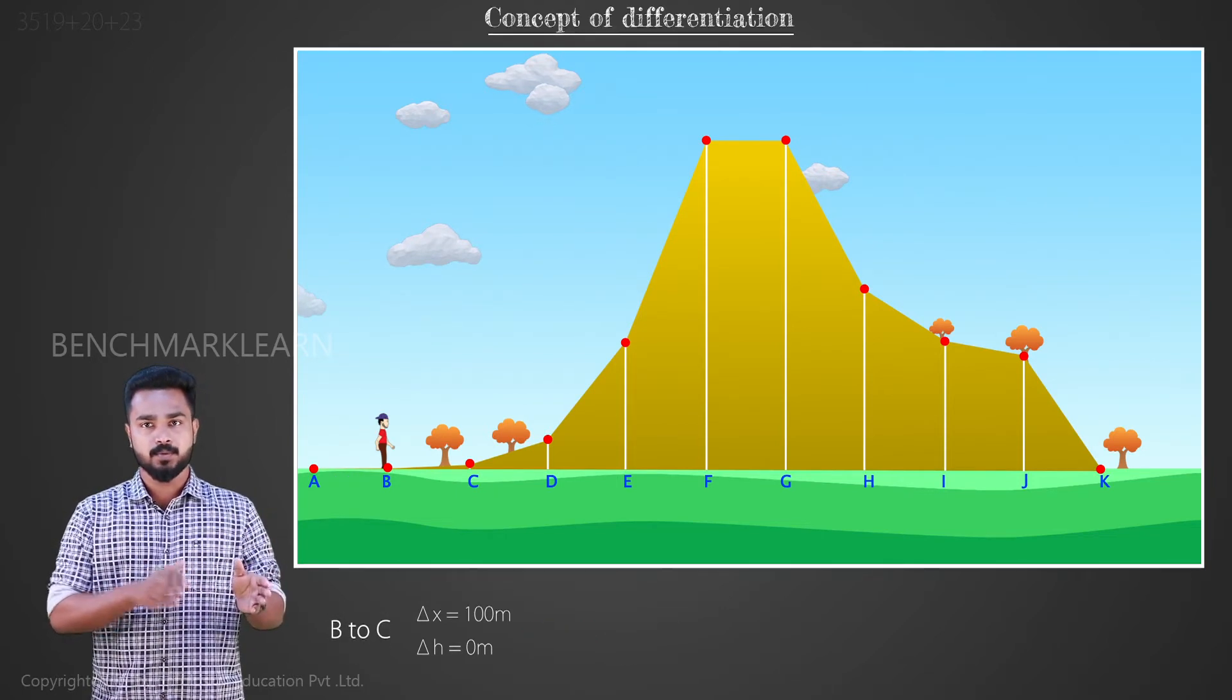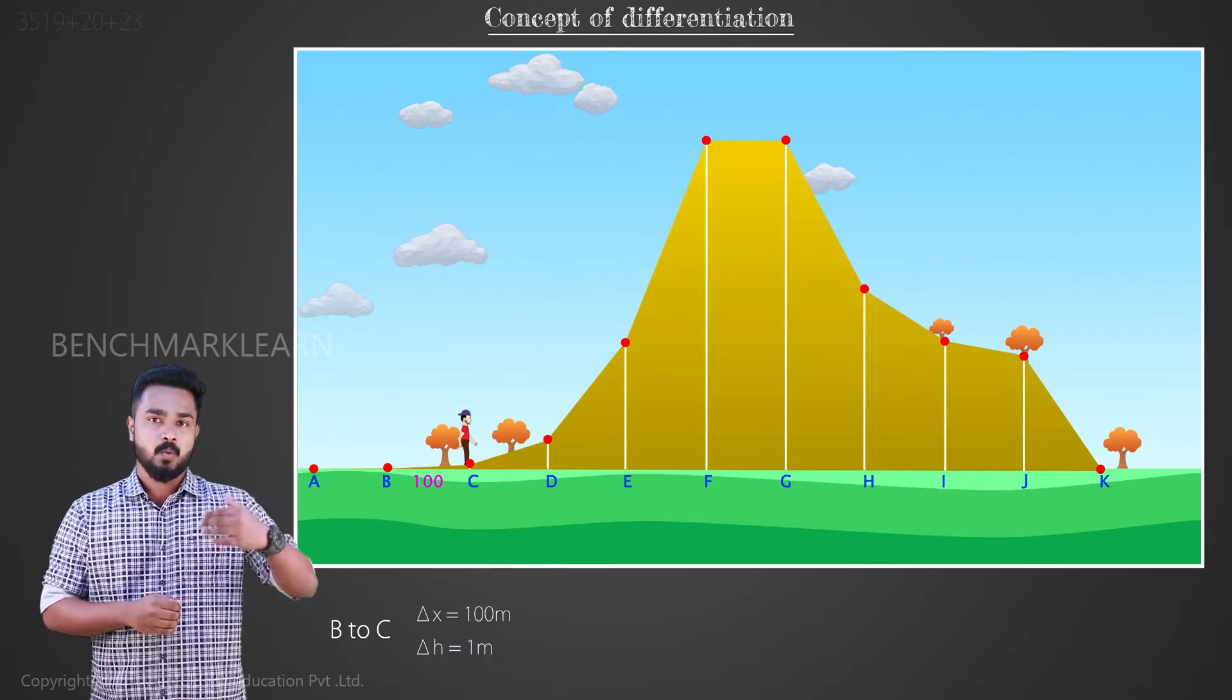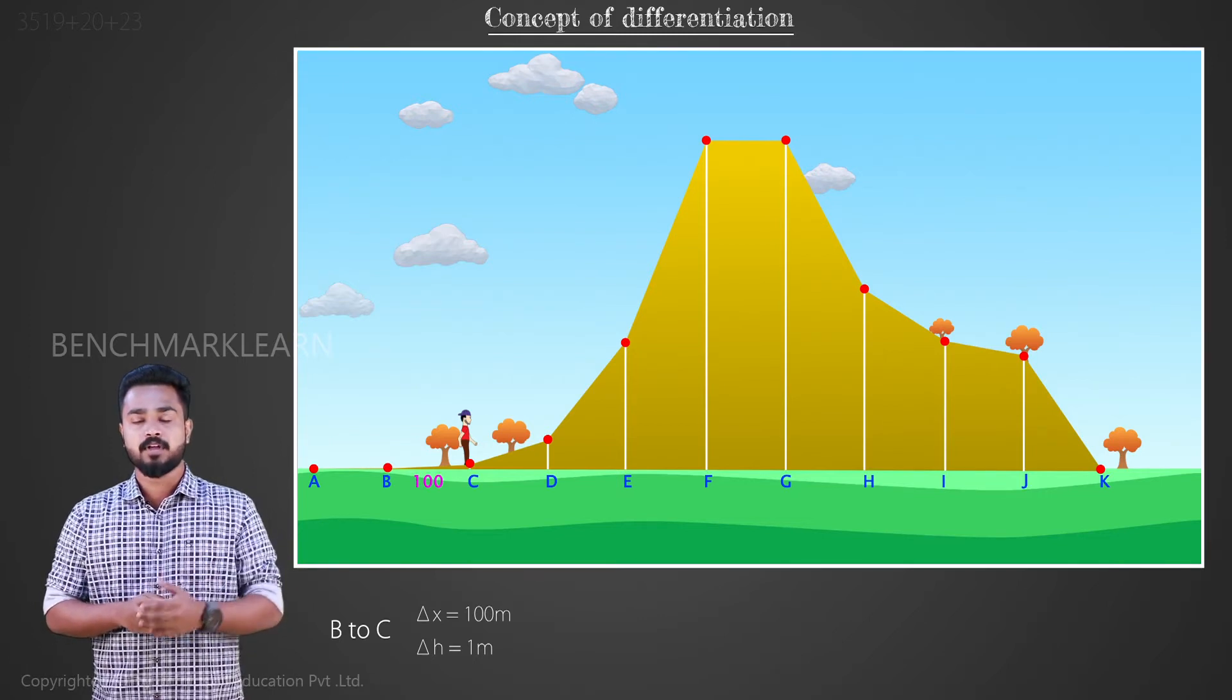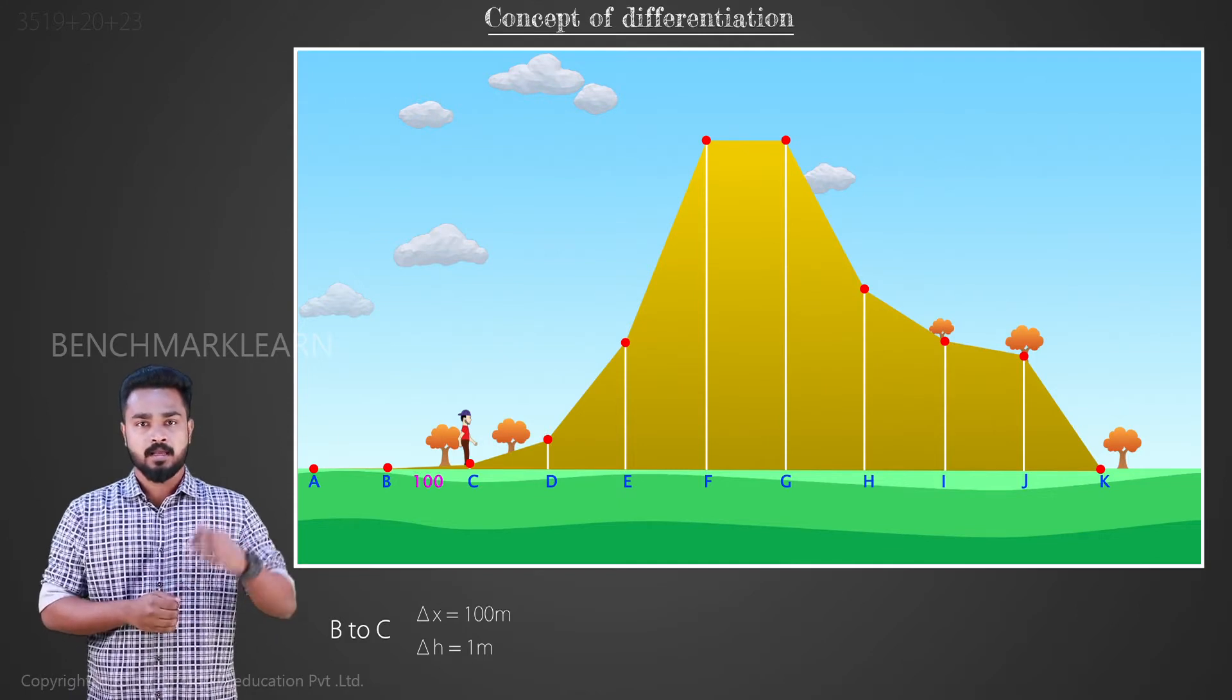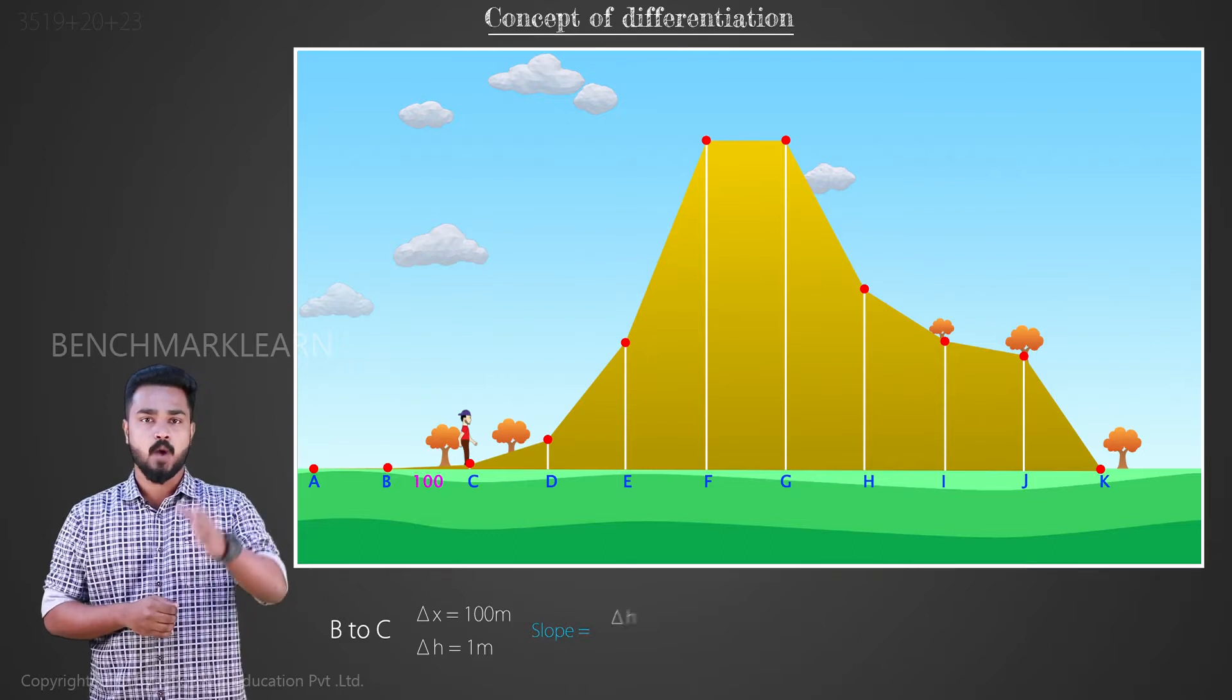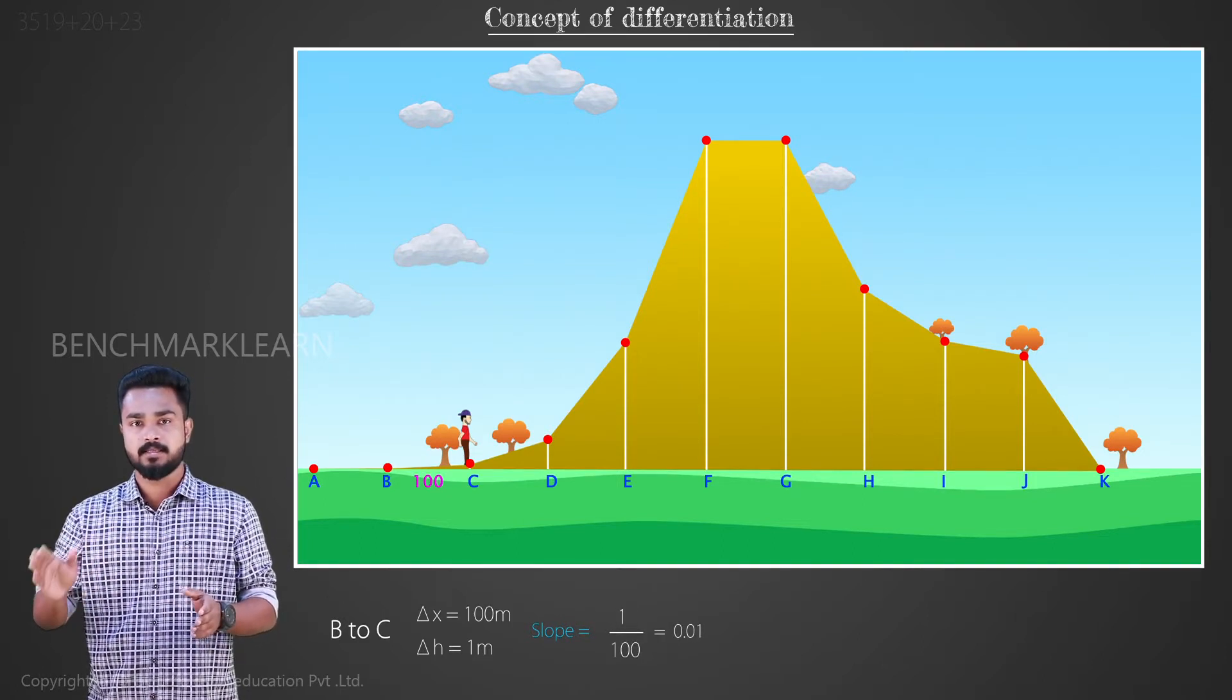Now moving from B to C, the height difference is 1 meter. While covering the horizontal distance of 100 meters, we moved vertically a distance of 1 meter. So between the points B and C, the slope of the hill is 1 by 100, that is equal to 0.01.